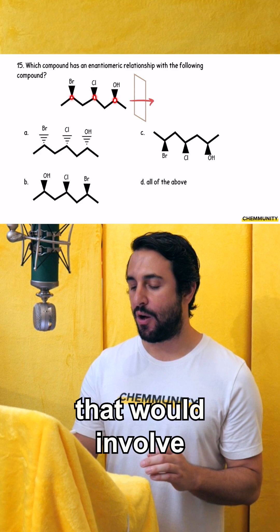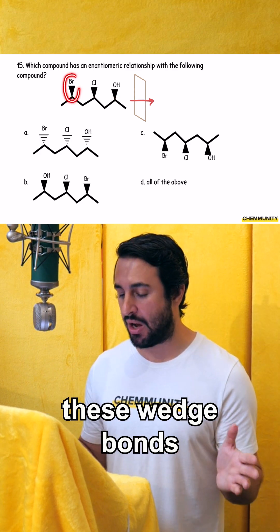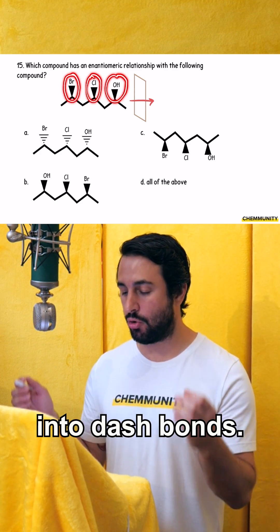In this case here, that would involve taking every one of these wedge bonds and turning them into dash bonds.